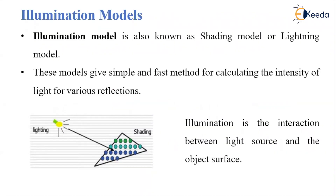We have to understand what illumination is. Illumination is nothing but the interaction between the light source and the object surface. Whenever the light falls on the object surface, we call it illumination. For that, different illumination models we have to study in this chapter.